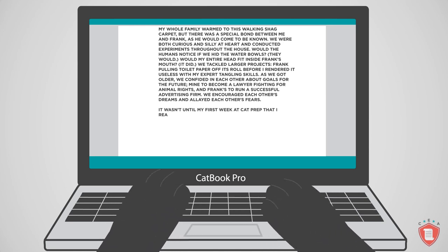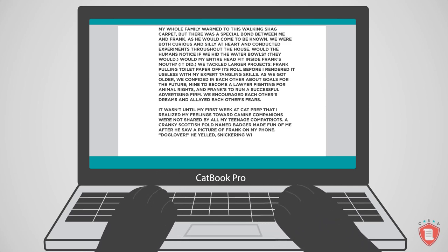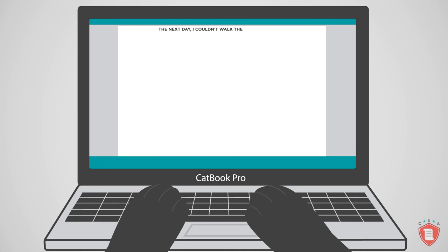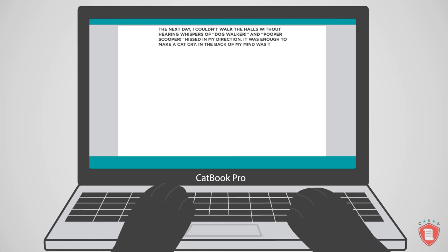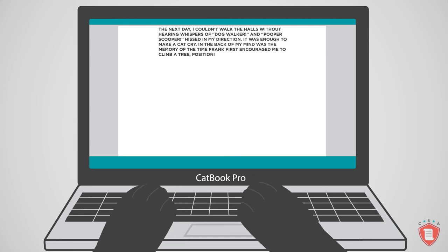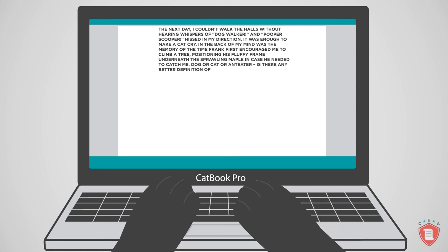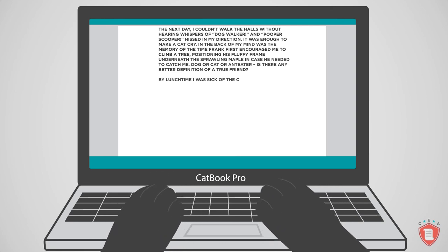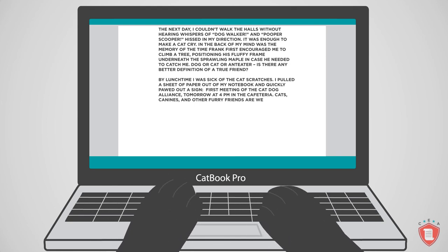It wasn't until my first week at cat prep that I realized my feelings toward canine companions were not shared by all my teenage compatriots. A cranky Scottish fold named Badger made fun of me after he saw a picture of Frank on my phone. Dog lover! He yelled, snickering with his friends. The next day, I couldn't walk the halls without hearing whispers of dog walker or pooper scooper hissed in my direction. It was enough to make a cat cry. In the back of my mind was the memory of the time Frank first encouraged me to climb a tree, positioning his fluffy frame underneath the sprawling maple in case he needed to catch me. Dog or cat or anteater, is there any better definition of a true friend? By lunchtime, I was sick of the cat scratches. I pulled a sheet of paper out of my notebook and quickly pawed out a sign. First meeting of the cat-dog alliance tomorrow at 4 p.m. in the cafeteria. Cats, canines, and other furry friends are welcome. I stuck it to the cafeteria bulletin board and held my head high as I scurried off to class.